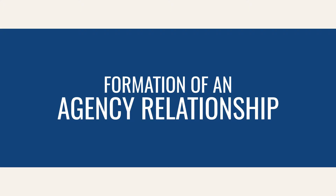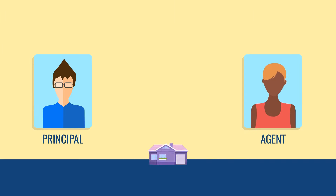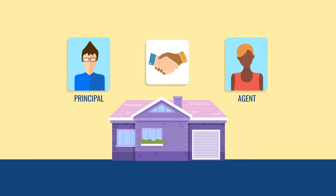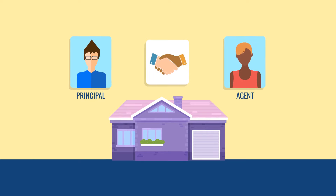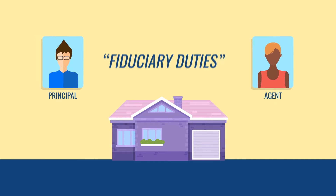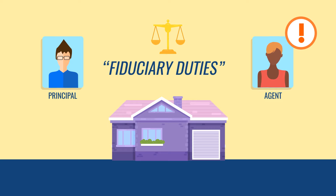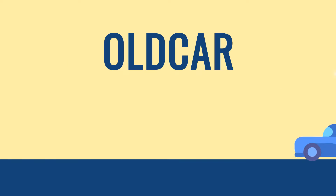Formation of an Agency Relationship. Agency relationships are a key concept on the Real Estate License exam. For you to represent any party in a real estate transaction, you must establish an agency relationship. A true agency relationship has additional duties called fiduciary duties that are often required by law. As an agent, you could be held liable for violation of these duties or not performing them as required. To help you remember them, use the acronym OLD CAR.